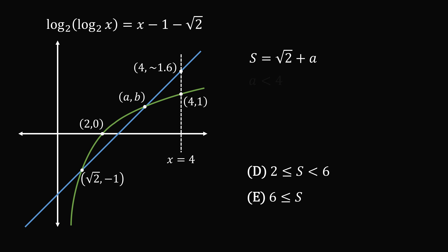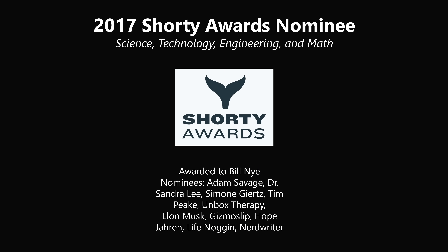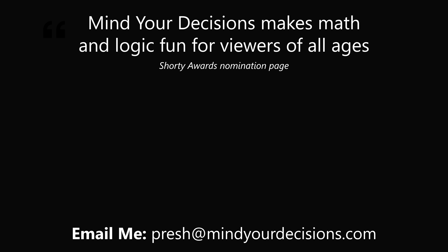So we've figured out that a is less than 4, meaning s is less than square root of 2 plus 4, which is less than 6. That means answer choice E is wrong, and that leaves us with answer choice D: 2 is less than or equal to s is less than 6. Thanks for making us one of the best communities on YouTube. See you next episode of Mind Your Decisions, where we solve the world's problems one video at a time.